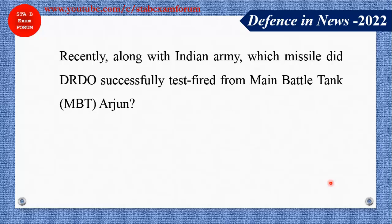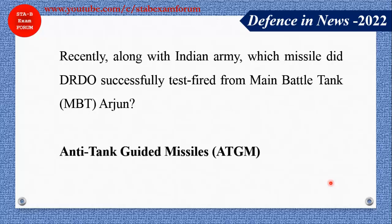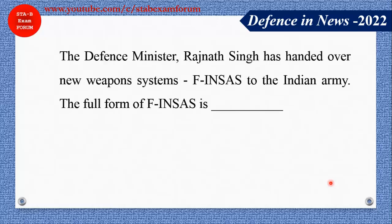Along with the Indian Army, which missile did DRDO successfully test-fire from the Main Battle Tank Arjun? Tanks use a small barrel-type weapon, so they need small missiles. The correct answer is ATGM — Anti-Tank Guided Missile.